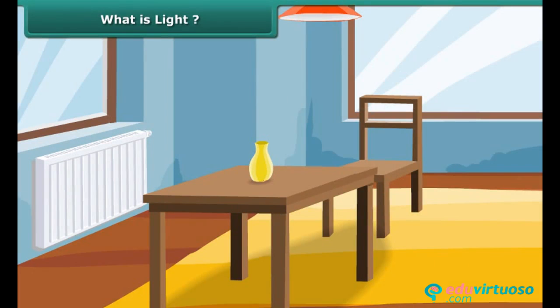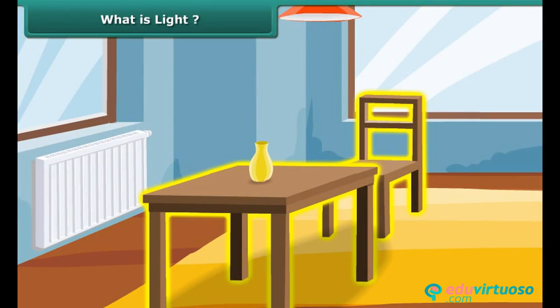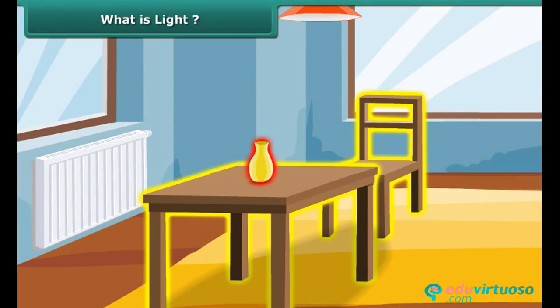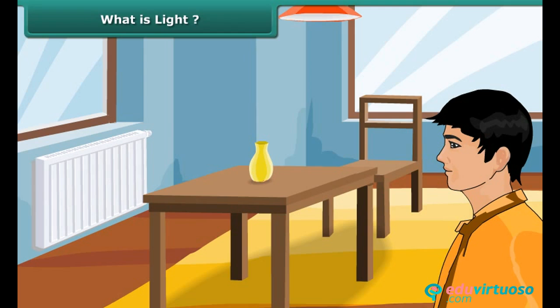You look at different things in this room. You can see the chair, table, and the beautiful vase on the table. Things are visible to us only when the light from the object enters our eyes.